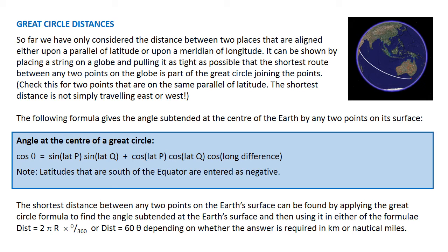This is the formula which gives the angle subtended at the centre of the Earth by any two points on its surface.